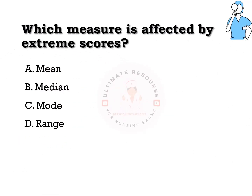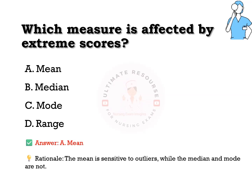Which measure is affected by extreme scores? Options are a) mean, b) median, c) mode, d) range. The answer is a) mean. The mean is sensitive to outliers, while the median and mode are not.